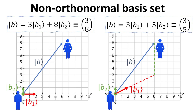However, one can also construct the vector b-ket using a non-orthonormal basis set. For the example on the left, b1 and b2 are orthogonal, and b2 is a unit vector, but b1 is not. Hence, this is not an orthonormal basis set. Nevertheless, it spans the R2 vector space, and the vector b-ket in this representation would be the column vector with elements 3 and 8 as shown. In the example on the right, b1 and b2 are not orthogonal, and b2 is also not a unit vector. Similarly, these vectors span the R2 vector space and allow us to represent b-ket as a column vector with elements 3 and 5.